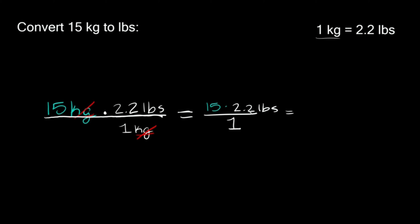So simplifying this again, 15 times 2.2 that's equal to 33. So 33 and then we're going to divide that by 1 but 33 divided by 1 is just 33. So then that goes away and then we still have pounds on top over here. So pounds.